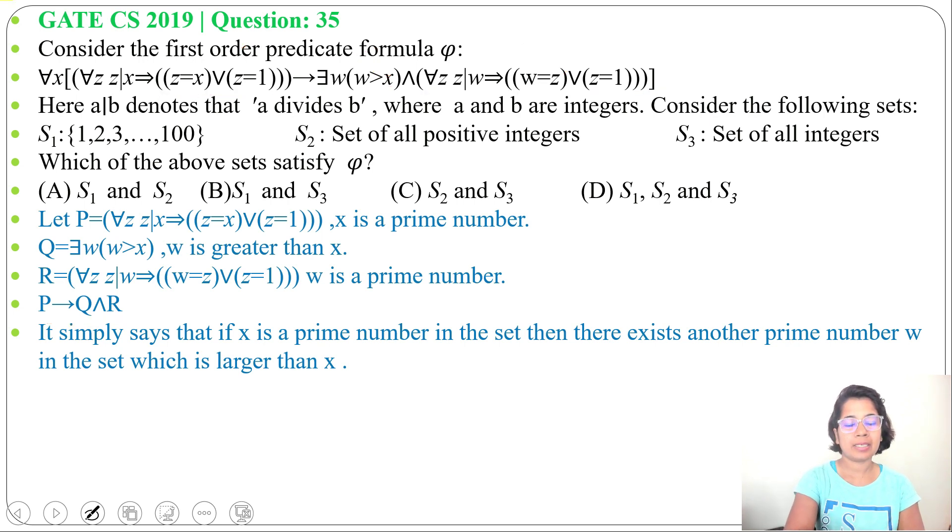Now let's check each set. Set 1 contains 1 to 100. Now let x equal 97. What will be w? Above 97, the next prime number is 101. Let w equal 101. But it is out of 100, right?